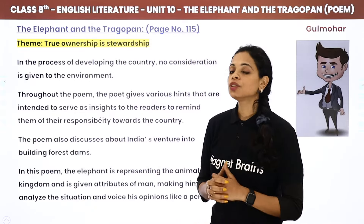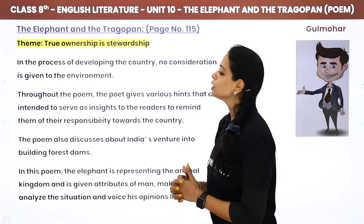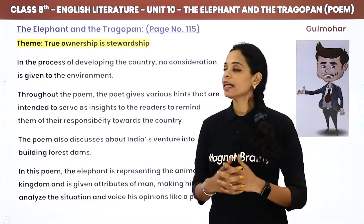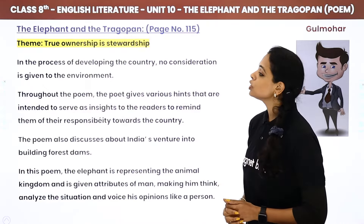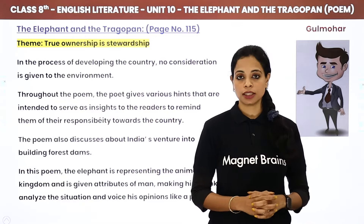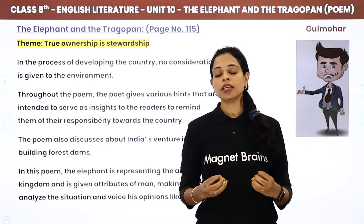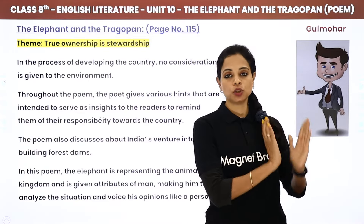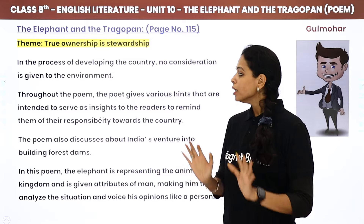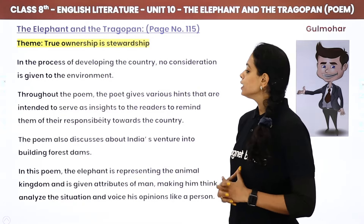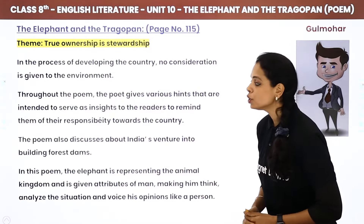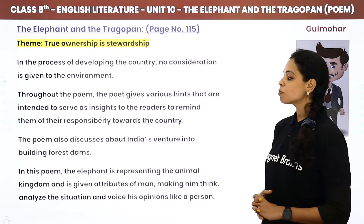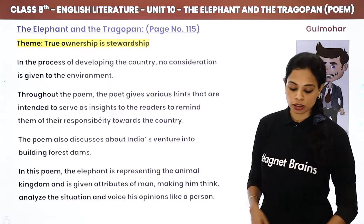So here, the first is theme. True ownership is stewardship. Basically, in the process of developing the country, no consideration is given to the environment. Throughout the poem, the poet gives various hints that are intended to serve as insights to the readers, to remind them of their responsibility towards the country.